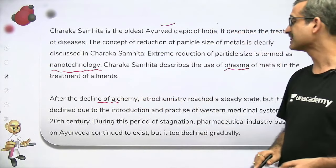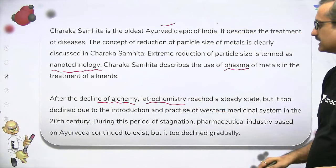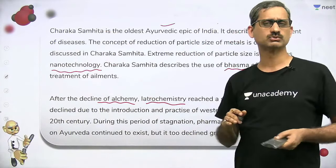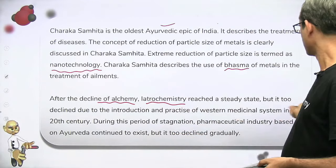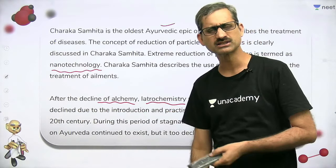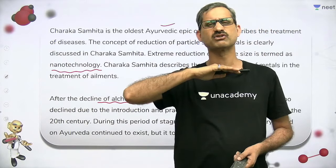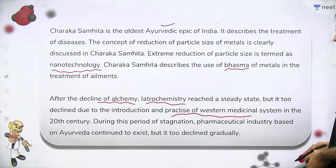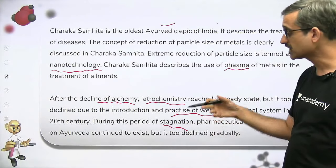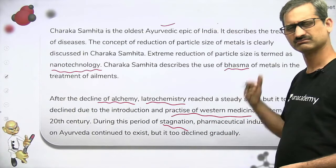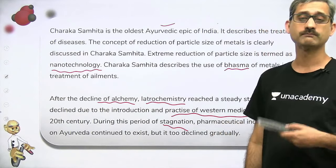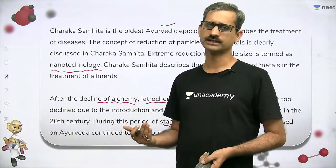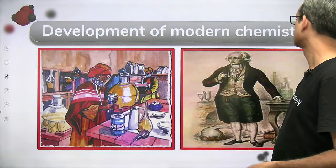Once there was a decline of alchemy, Iatrochemistry — medicinal chemistry — reached a steady state. Science is something that either moves up or moves down; it doesn't remain steady for long. It gradually declined due to the introduction and practice of the western medicinal system in the 20th century. During this period of stagnation, the pharmaceutical industry based on Ayurveda continued to exist but declined, as knowledge passed from person to person stopped, and people lost faith in Ayurveda in favor of western medicines.